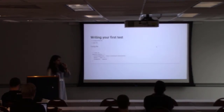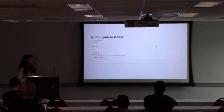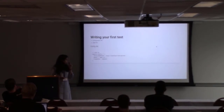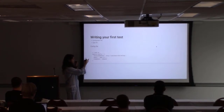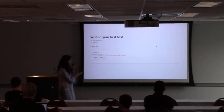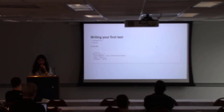Writing your first test requires two files: a configuration file and a spec file. The configuration file tells Protractor where to talk to the Selenium server, where the spec files are located, and the framework — Jasmine by default. In the config file, you specify the Selenium address from the previous slide, the specs as `spec.js`, and the Jasmine framework. The describe syntax and test structure come from Jasmine.